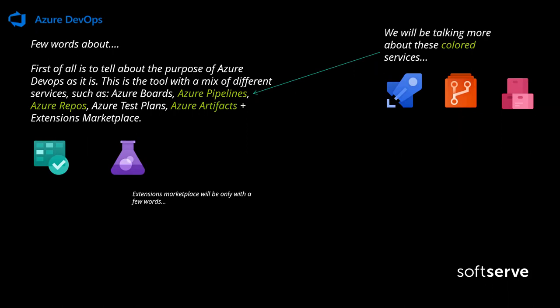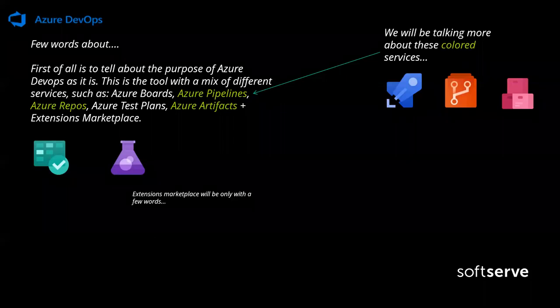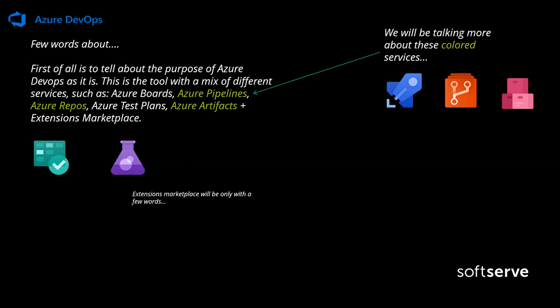Azure Artifacts is basically a storage for artifacts which are produced by build pipelines. They can also be produced by deployment pipelines, but in most cases deployment pipelines take the build pipeline artifacts. In this storage, we can also store different kinds of packages like NuGet, or third-party libraries which can be stored and placed there externally, not from build pipelines.